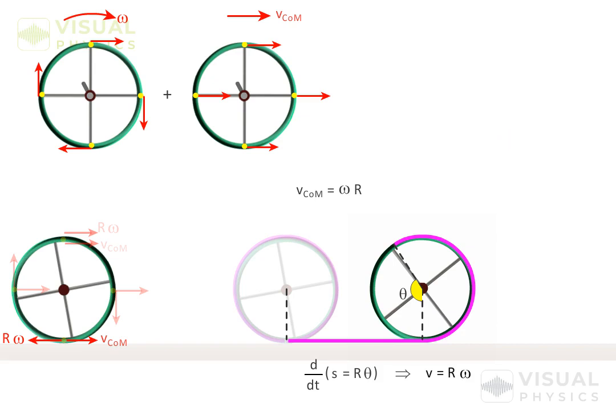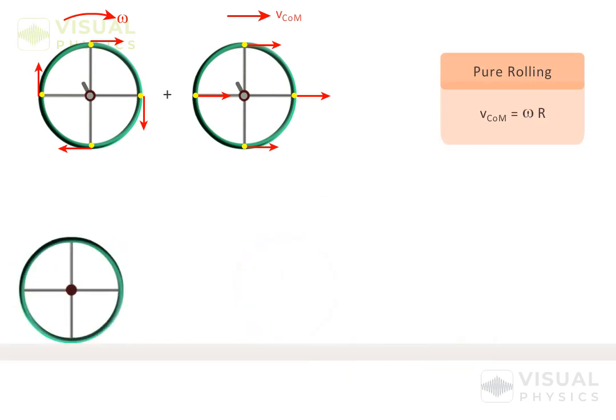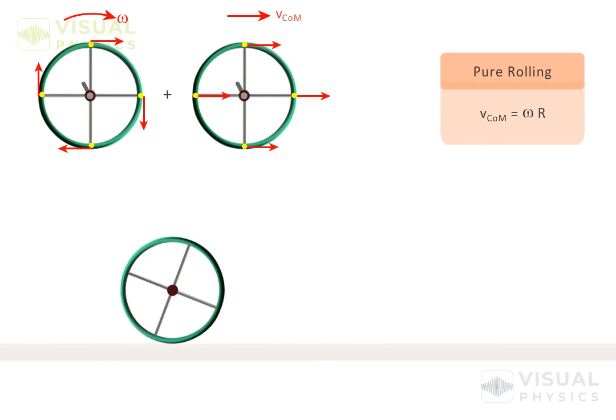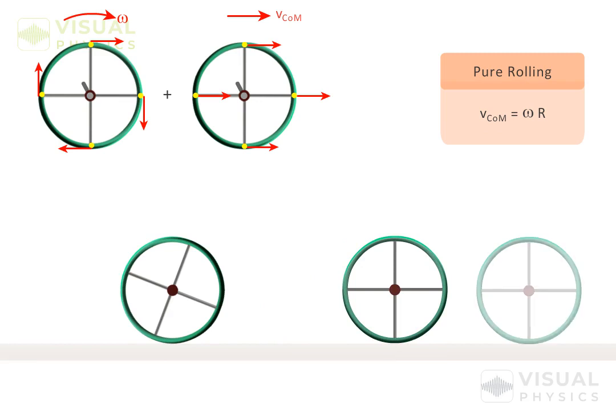Such a rolling is also known as pure rolling. We can infer the same by saying that as the object is not slipping over the surface like this or like this, then the relative velocity of this point with respect to the ground should be equal to zero.